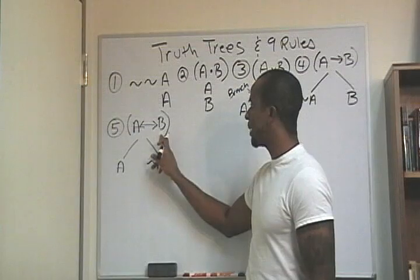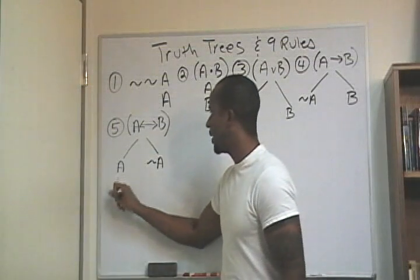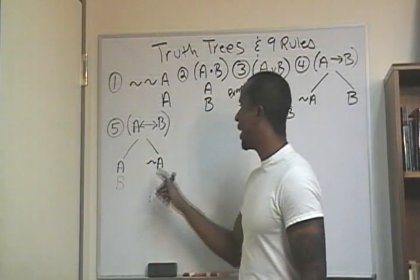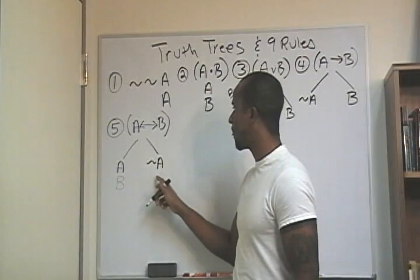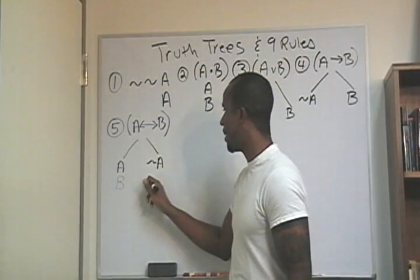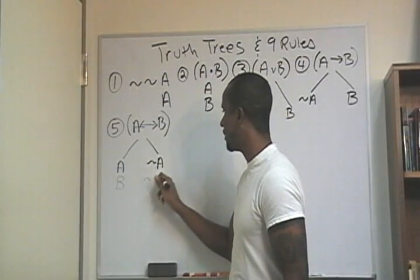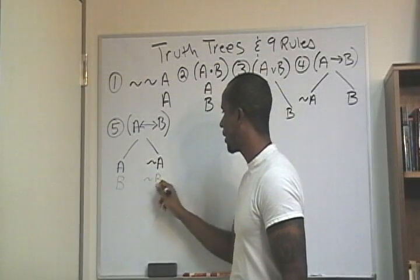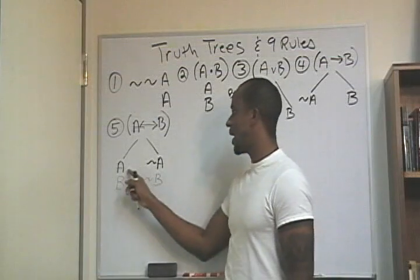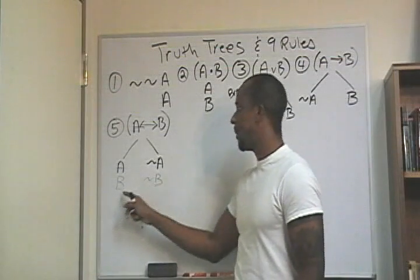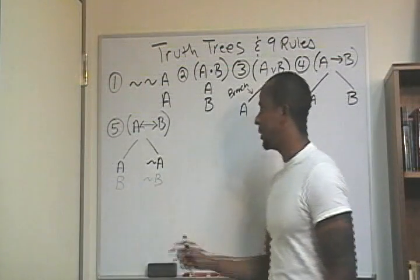With respect to B, I'm going to have B. And with respect to B on the other side, I'm also going to have not B. So I have A and not A, B and not B.